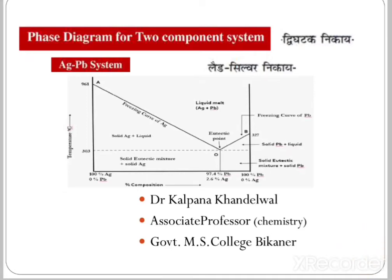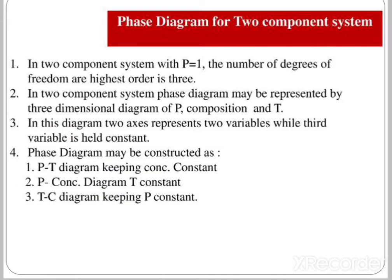Hello students, welcome to phase dual class. Today we will discuss phase diagrams for two-component systems. In a two-component system with one phase, the number of degrees of freedom are highest at three. The phase diagram may be represented by a three-dimensional diagram of pressure, composition, and temperature. It may be constructed as a pressure-temperature diagram keeping concentration constant, a pressure-concentration diagram keeping temperature constant, or a temperature-concentration diagram keeping pressure constant.